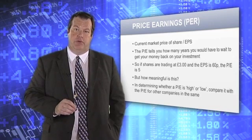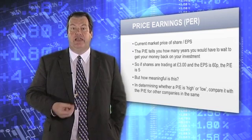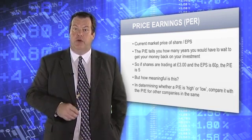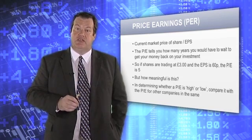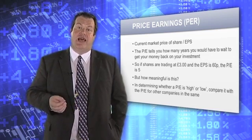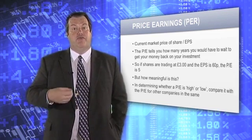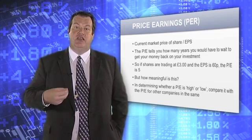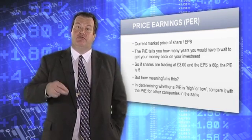The classic measure that people look at is the price-earnings ratio. This is the relationship between the price of the share and the earnings per share. Earnings per share is the amount of money that the company generates as profits divided by the number of shares in issue. If you take the earnings per share figure and look at that against the price of the share quoted on the market, you get some idea of the price-earnings ratio. Another way of thinking about the price-earnings ratio is to say how many years' worth of earnings would you need to make off that share to reflect the share price.